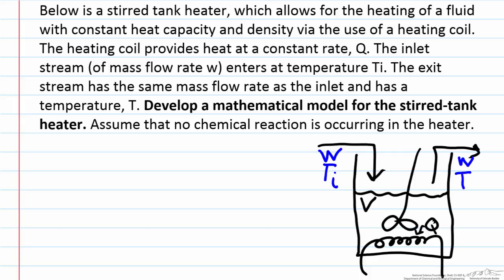The fluid is heated by the use of a heating coil provided at the bottom of the diagram in which a constant rate of energy Q is provided to the heater. The volume of the liquid inside the stirred tank heater is volume V.